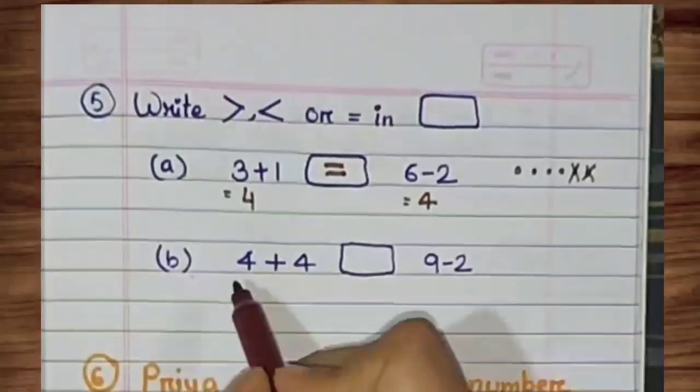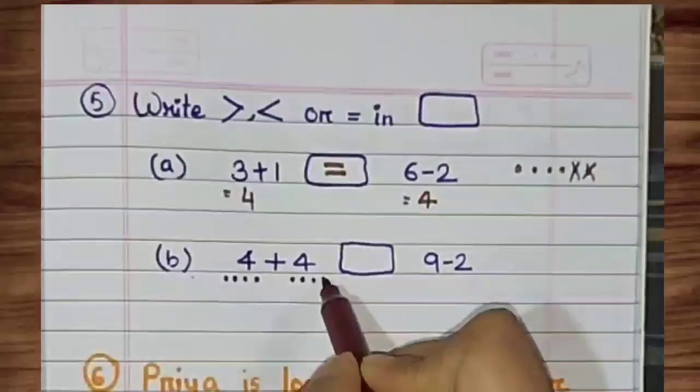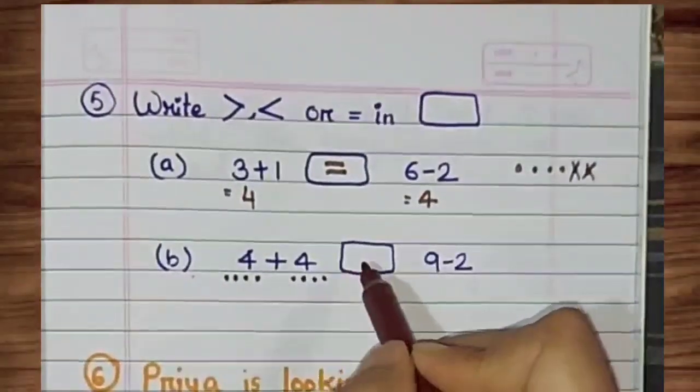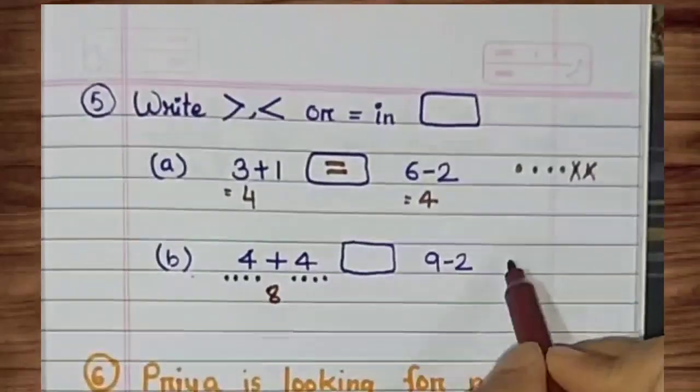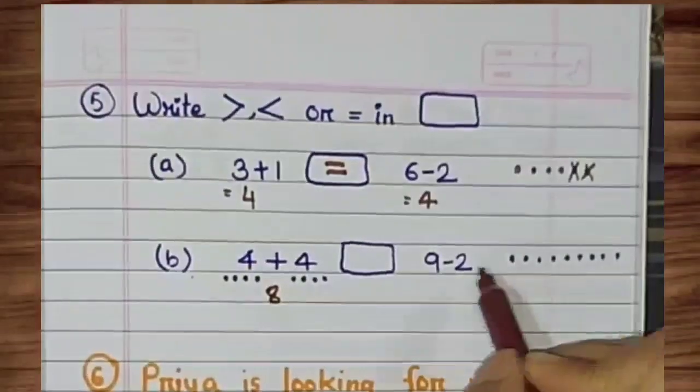Next, 4 plus 4. By giving the dots 4 and 4 dots. Count the dots. That makes 8. The next number is 9. By giving 9 dots.